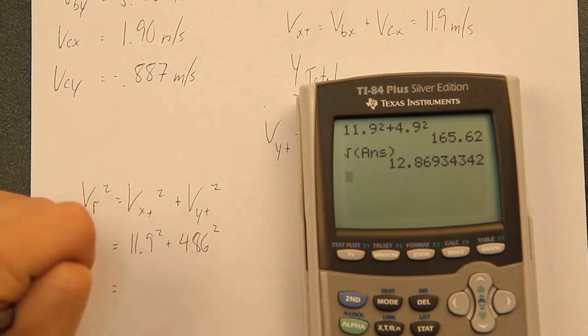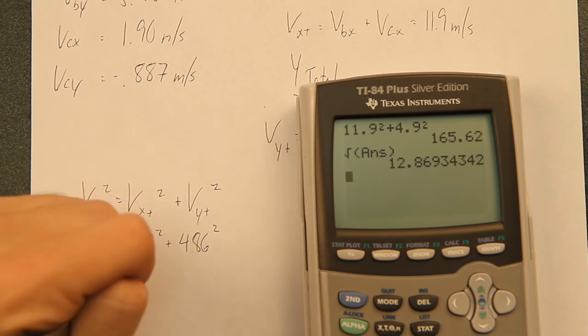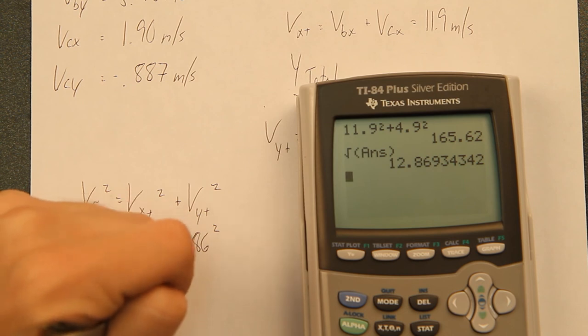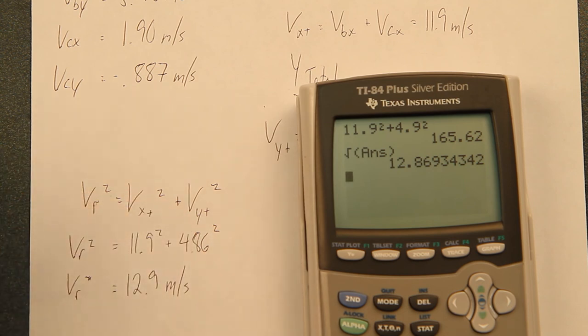So our velocity of our resultant, don't need the square root anymore, it's going to be 12.9 meters per second, and that's in significant figures.